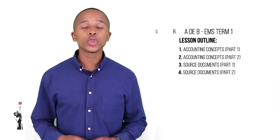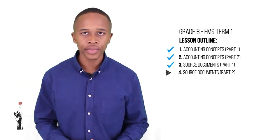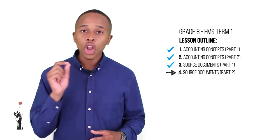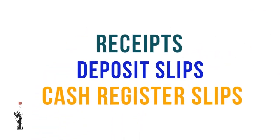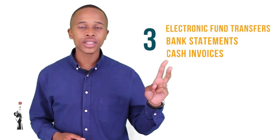Good day, Grade 8s, and welcome to Tumamina Teaching. You are tuned into your fourth and final Grade 8 EMS lesson for this term. In the previous lessons, we looked at a few accounting concepts. In the last lesson, we looked at three types of source documents — receipts, deposit slips, and cash register slips. In this lesson, we will be discussing three other source documents: electronic fund transfers, bank statements, and cash invoices. Are you ready to learn and become more business savvy? Let's go!